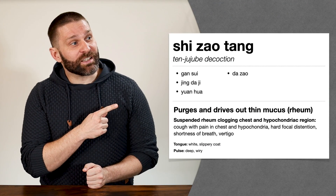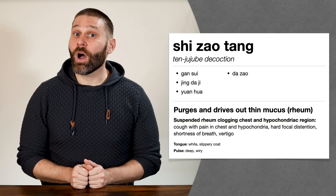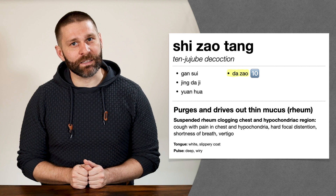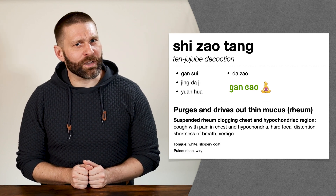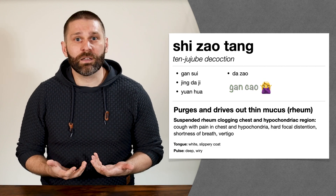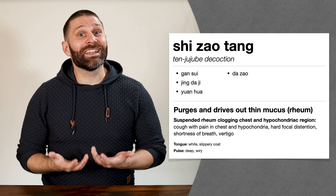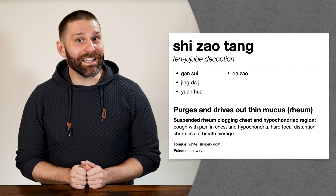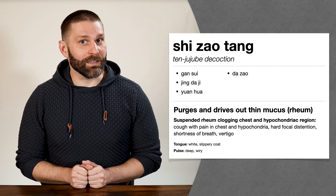So you definitely need to know this information for your big tests, but how useful is it in actual practice? One example where the 18 incompatible herbs does come up is in the formula Schurzautang, the 10 jujube decoction, used for fluid accumulation in the chest. This formula uses a bunch of harsh expellants to treat it. Normally we would use Gansau to harmonize or moderate the harshness of these toxic herbs, but we can't do that here because of the incompatibility between Gansau and these herbs — remember, Gans and Gans don't go together. So we use Datsau jujube fruit instead to take care of that harmonizing action.